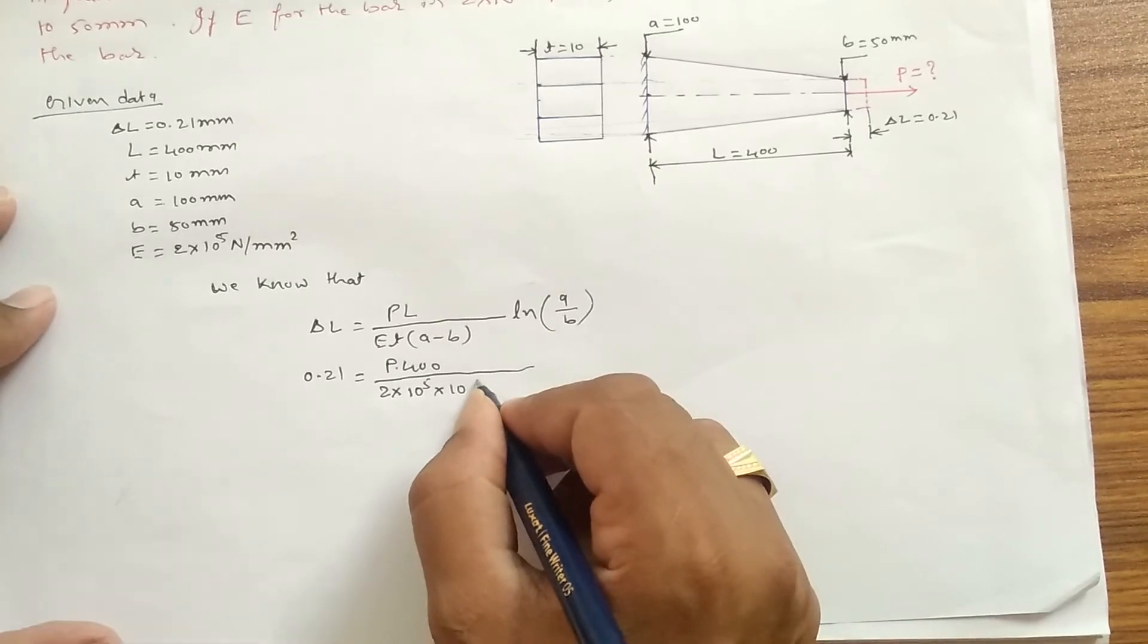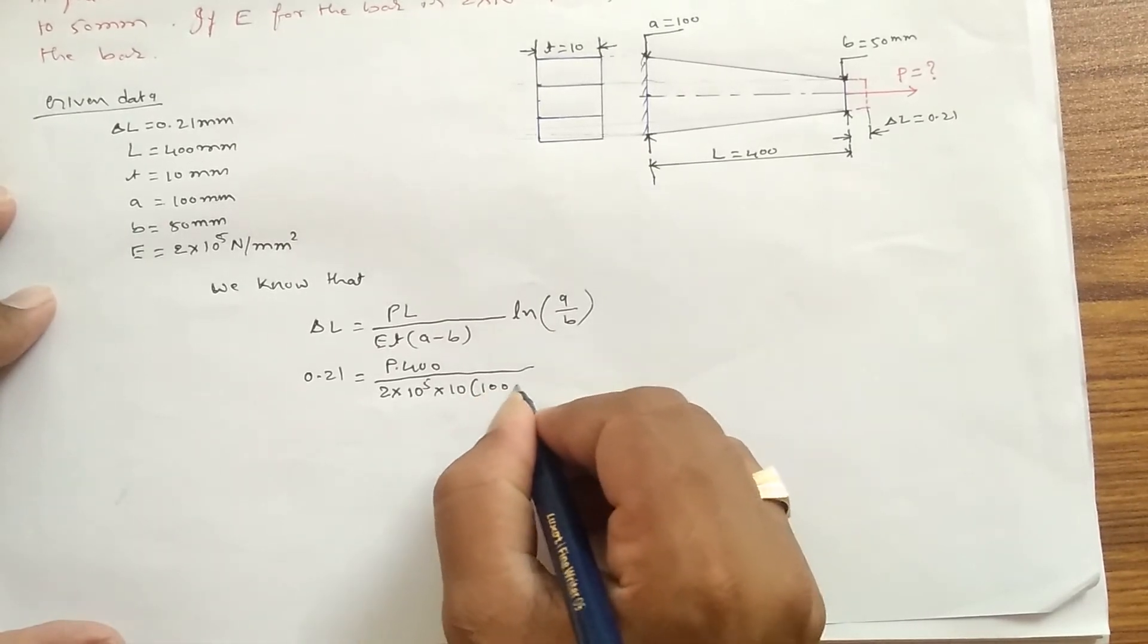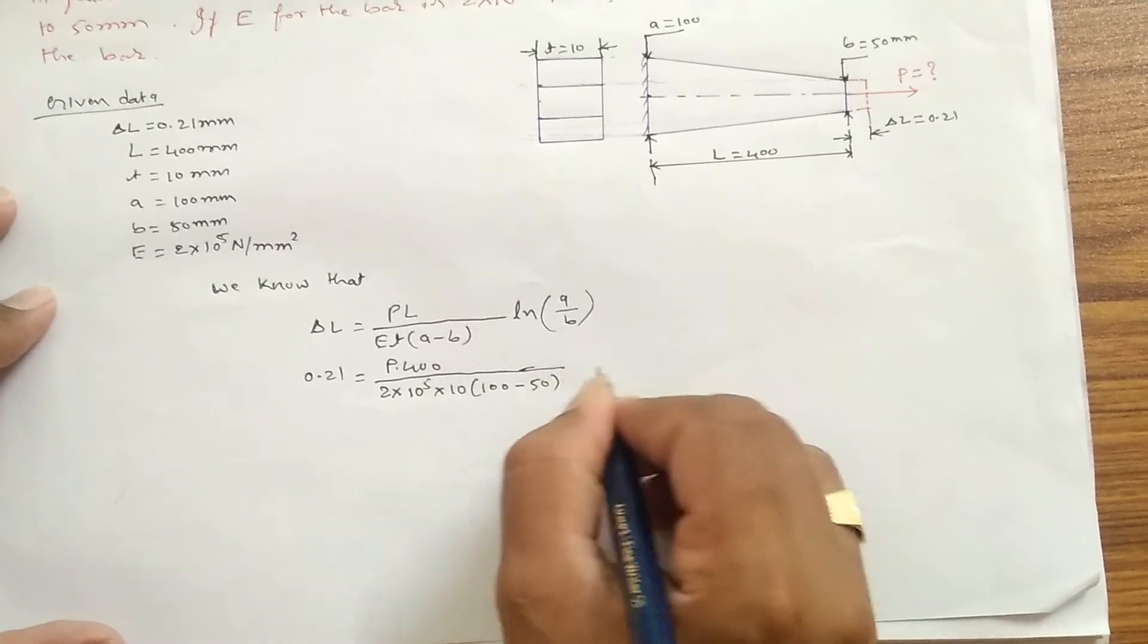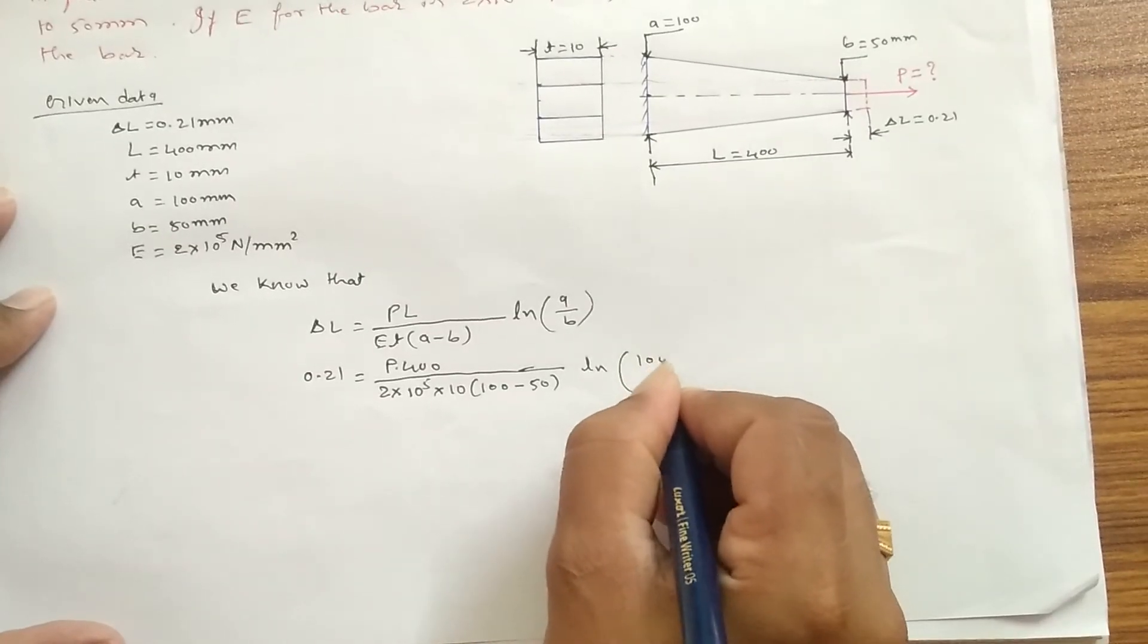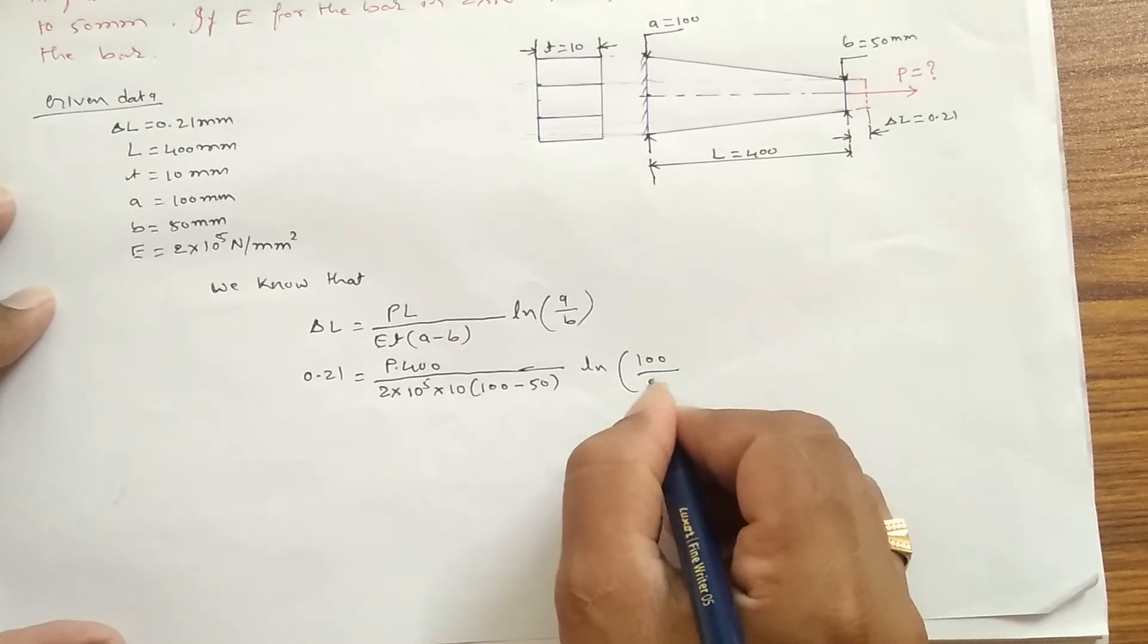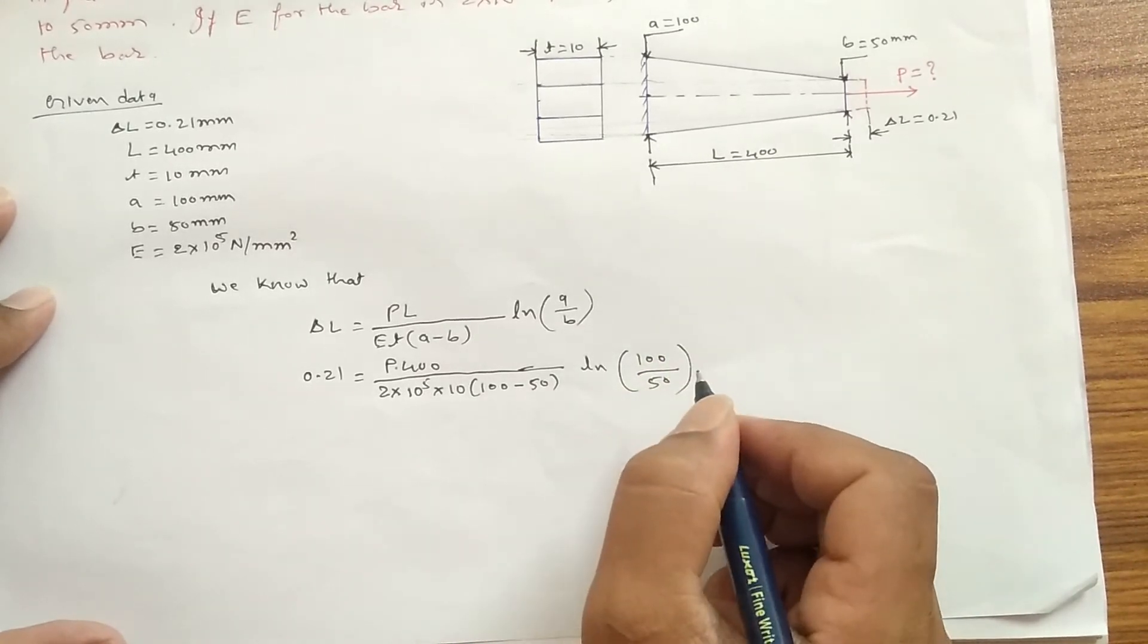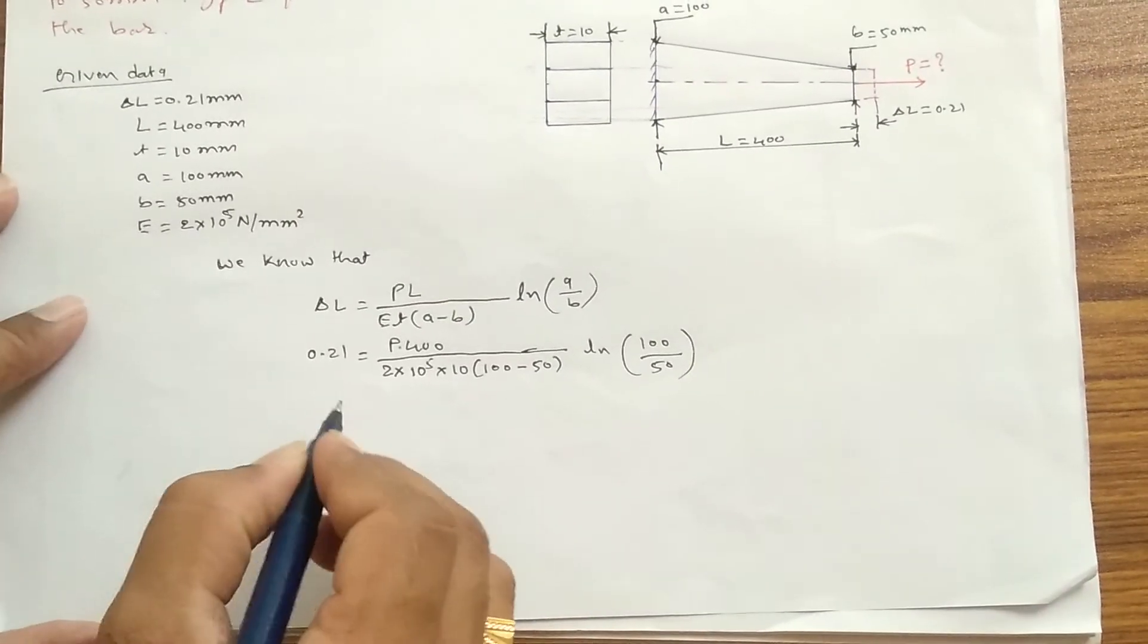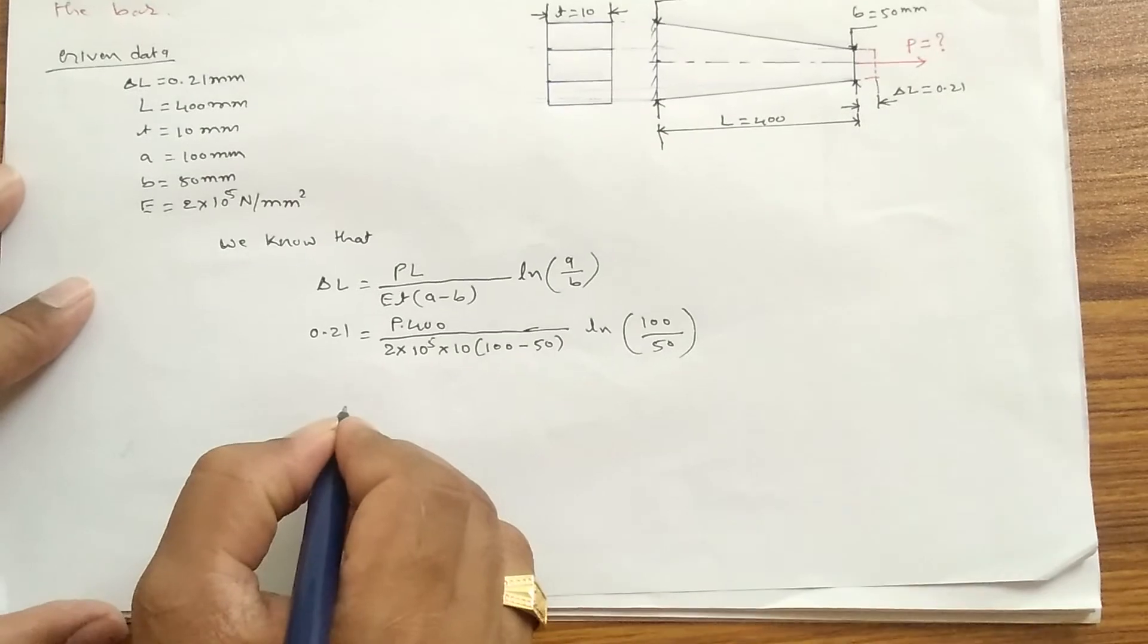What else they gave? And here also given: 100 - B is 50, and ln of 100 divided by 50. So now we need to find P.